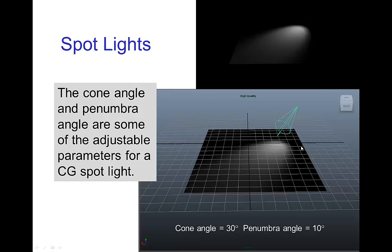In computer graphics, these types of light sources, these spotlights, typically have a separately adjustable cone angle for the light and a penumbra angle.